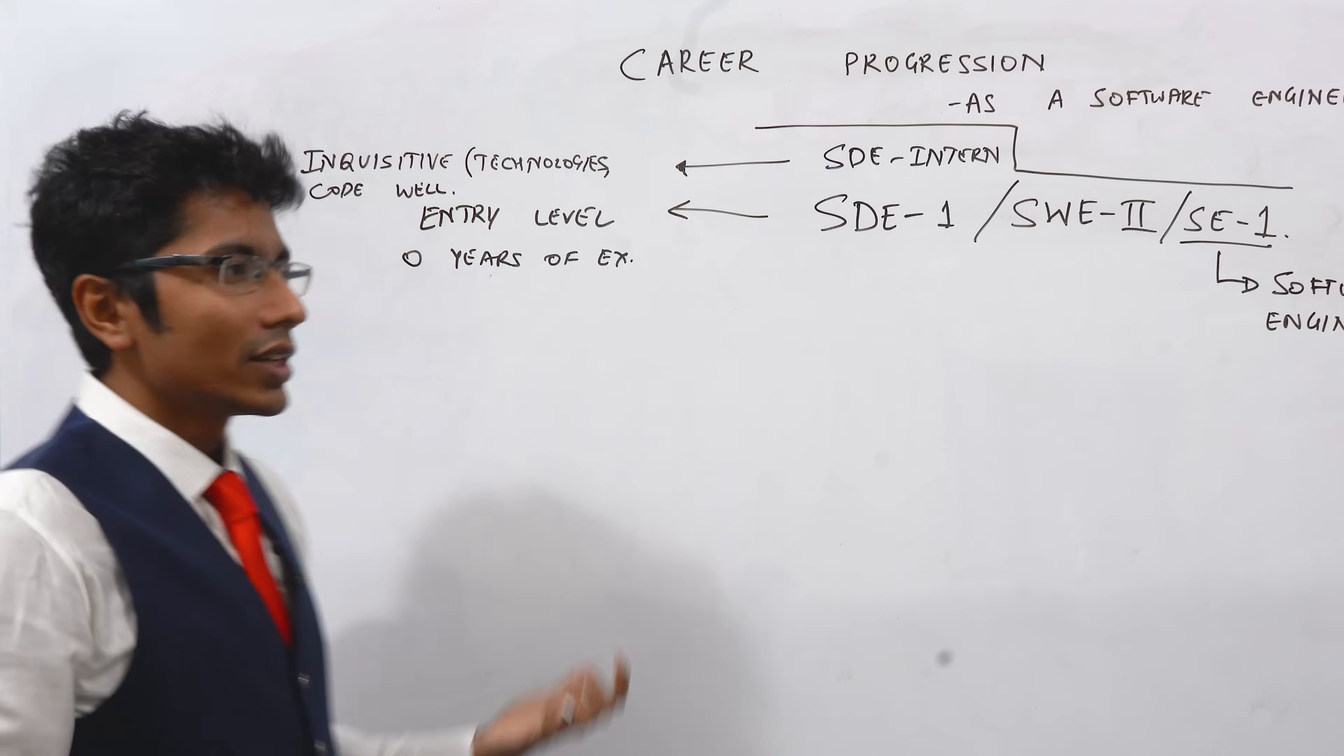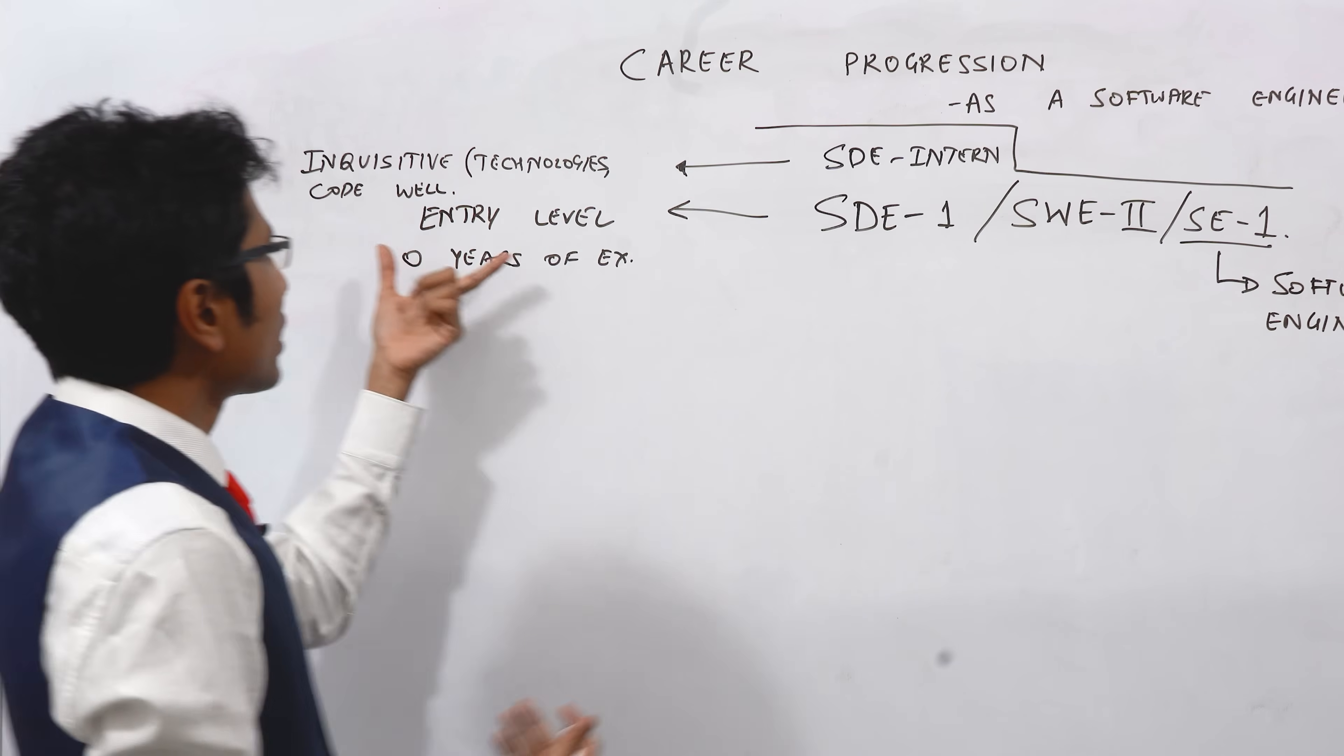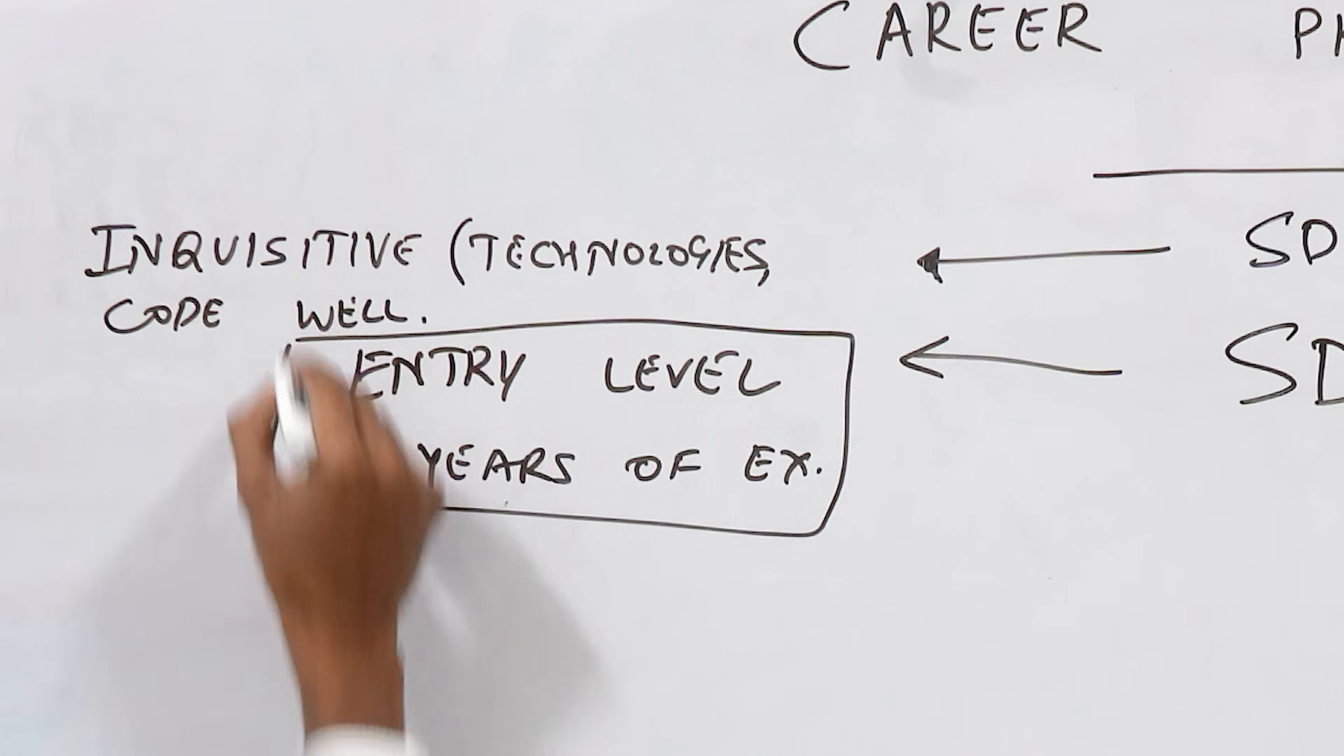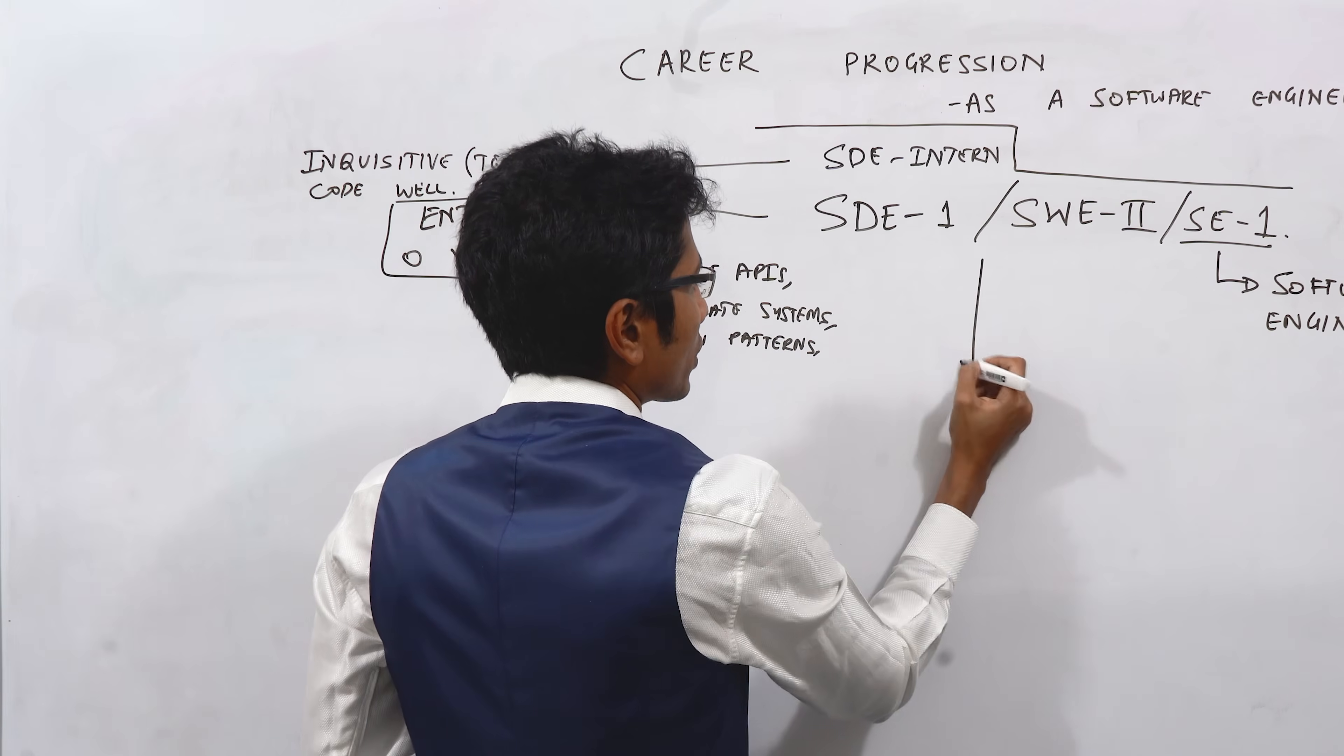You already perform as a SD2 before you get the SD2 promotion from SD1. So as an intern, you're interested in technologies, you code well, you code at the level of SD1 that is required here and we are happy with you. Let's go for the next position, which is SD2.